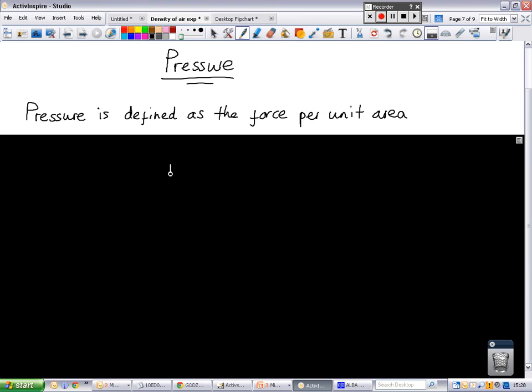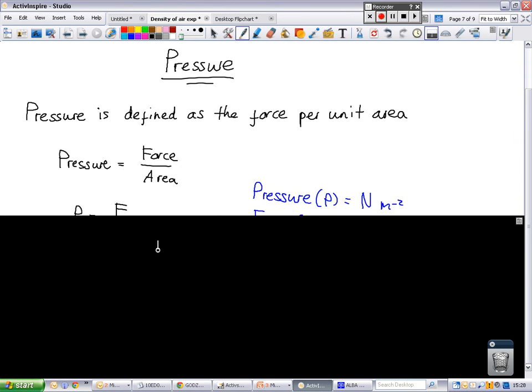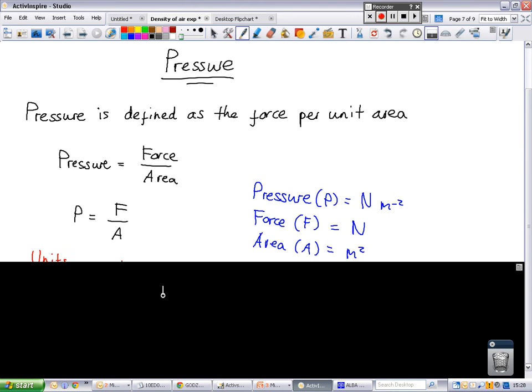The pressure we decided was the force per unit area. So what causes pressure is the force and the area over which it's applied. If we write that out in equation form, we get P equals F divided by A.